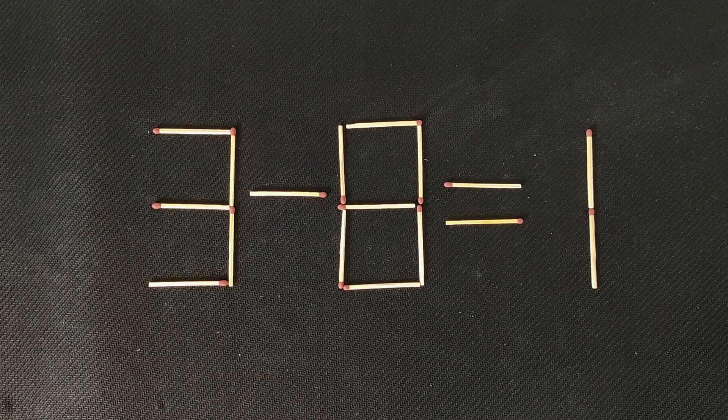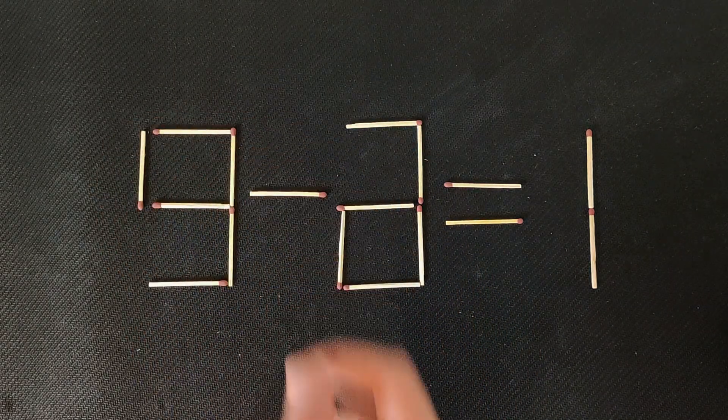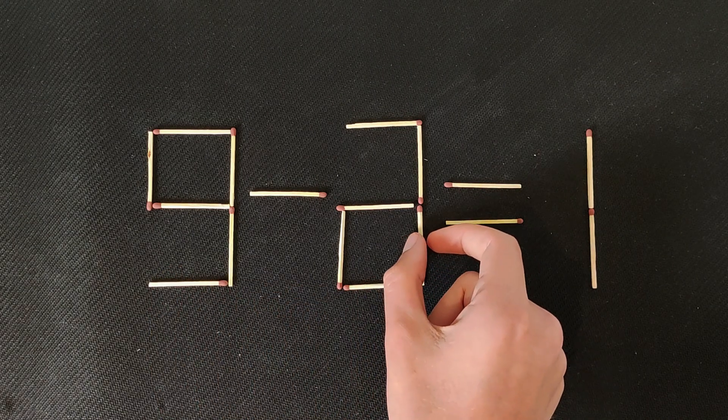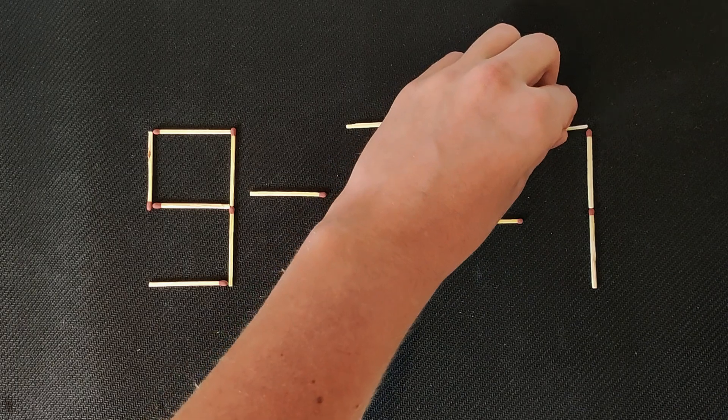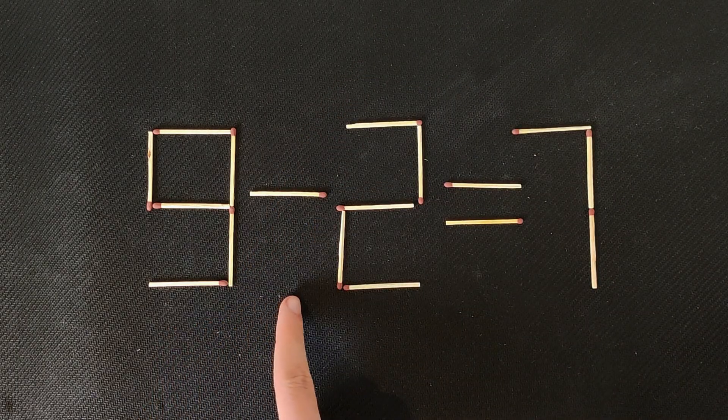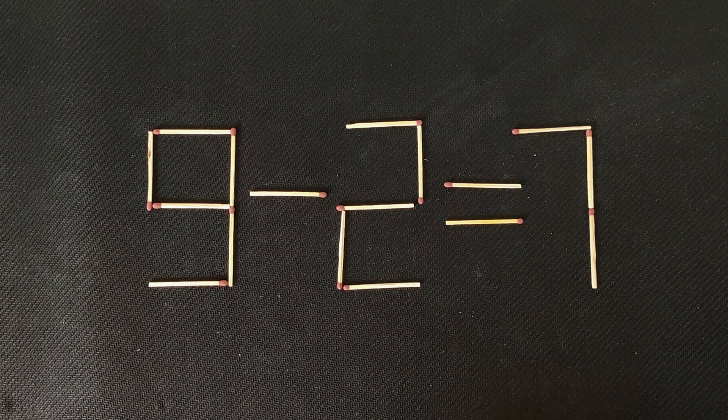And right now I'll show you how it's solved. We need to move this match here. Yes, here. And this match we need to move here. Perfect. And now 9 minus 2 equals 7. That's correct.